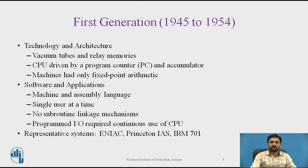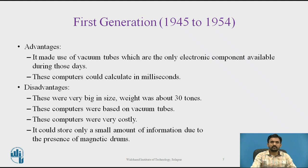In the first generation, from 1945 to 1954, computers were based on vacuum tube technology. The first large electronic computer was ENIAC — Electronic Numerical Integrator and Calculator — which used high-speed vacuum tubes and was designed primarily to calculate the trajectories of missiles. These computers used separate memory blocks for program and data. Later, in 1946, von Neumann introduced the concept of stored programs, in which data and programs were stored in the same memory block.